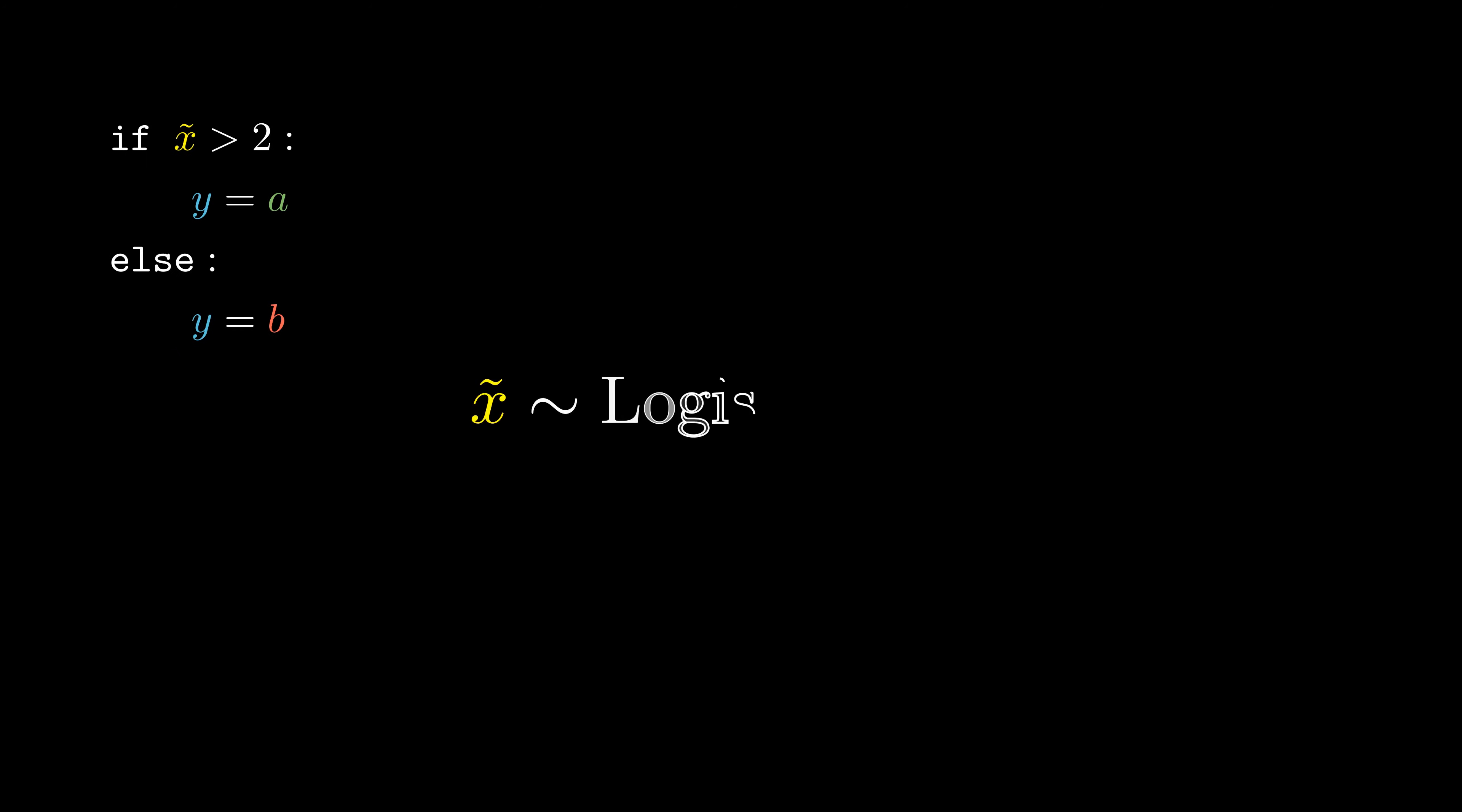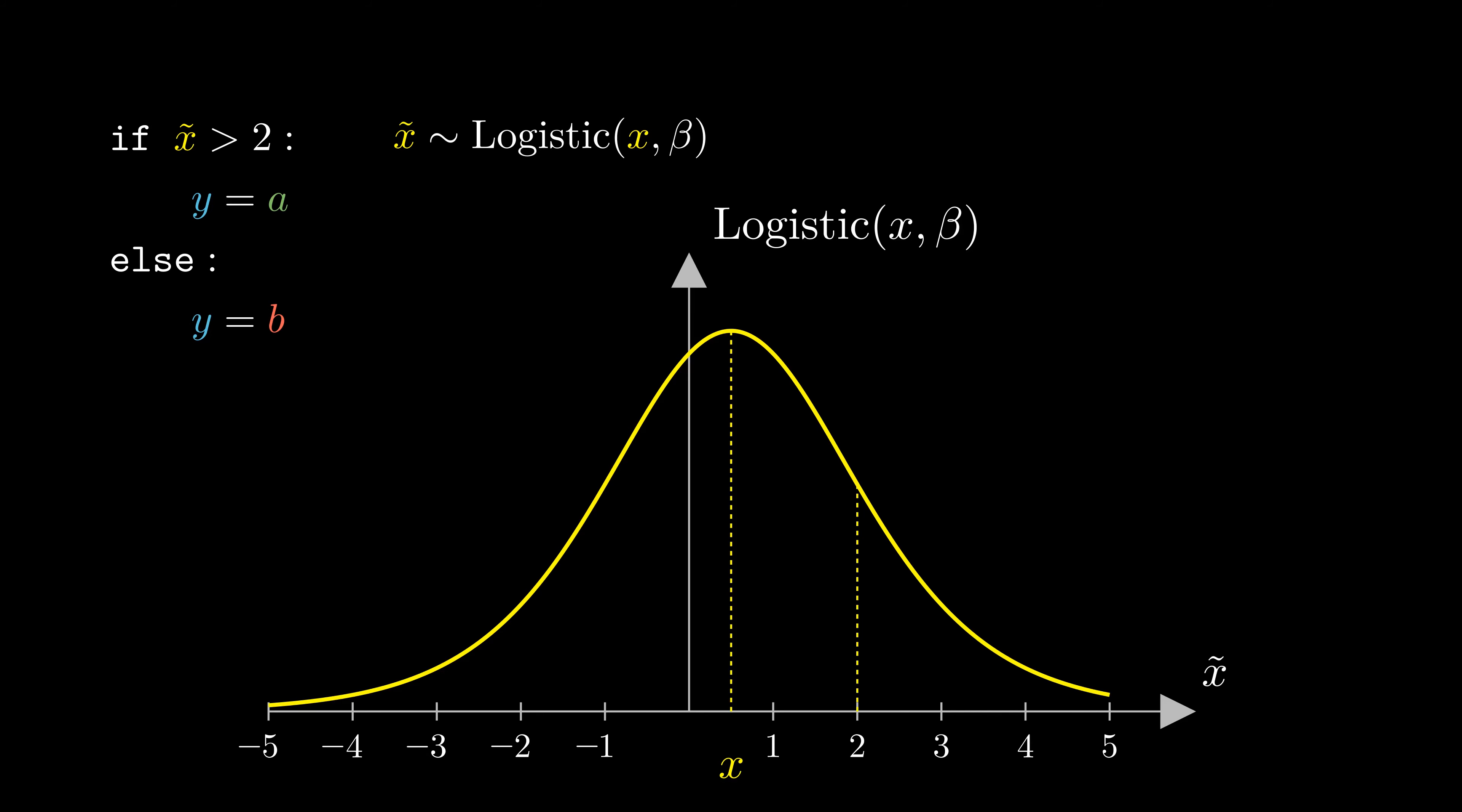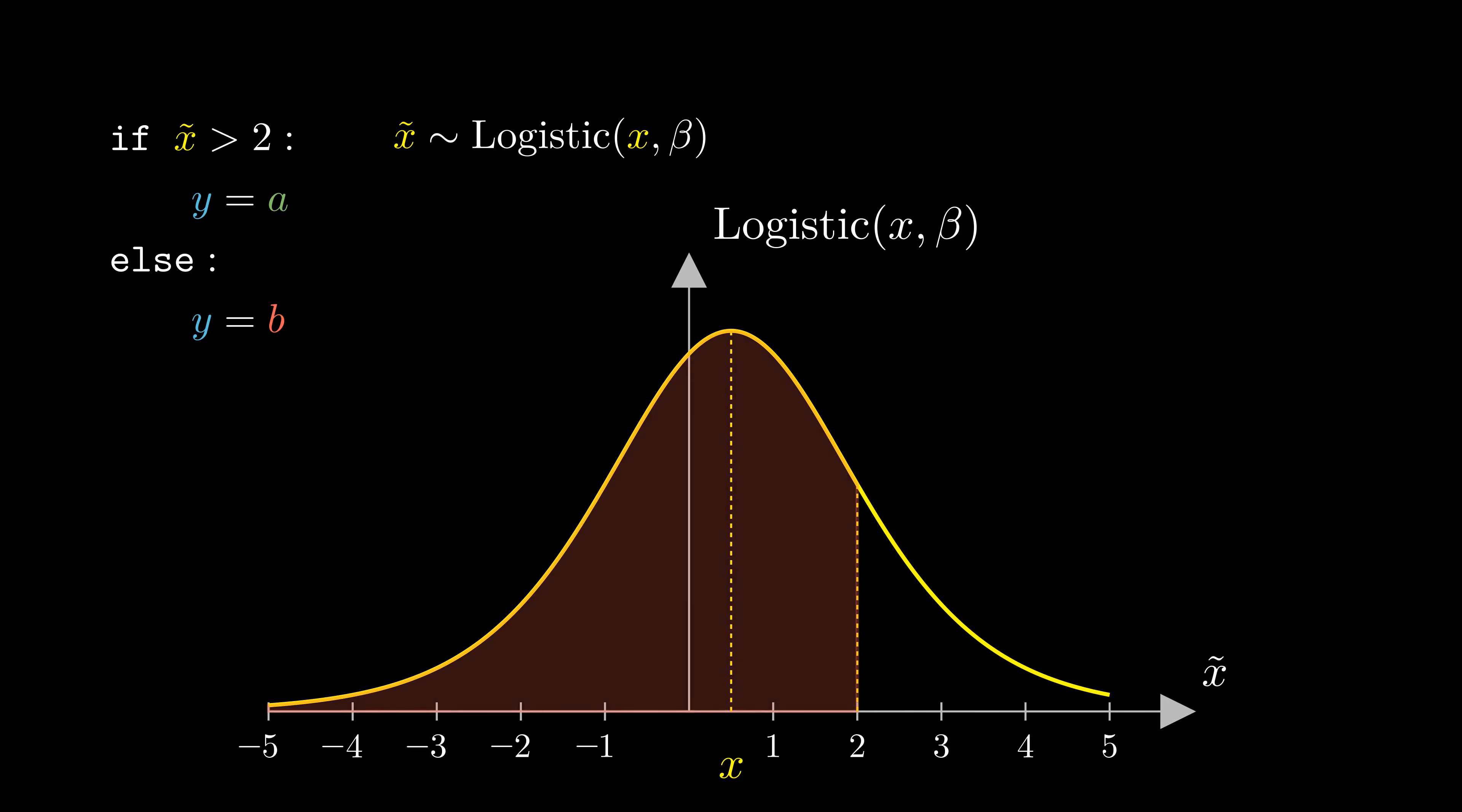Let us perturb x by a logistic distribution around x, x tilde. Our condition is that x should be greater than the value of 2, so we mark the cases where the condition is not satisfied with red on the left and where the condition is satisfied with green on the right.